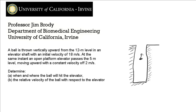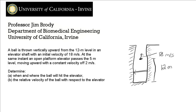I've drawn this as an elevator shaft. Here we have the ball at 12 meters above the bottom at t equals zero, with an initial velocity of 18 meters per second upward. The elevator platform is at the 5-meter level, moving with its own velocity of 2 meters per second upward.